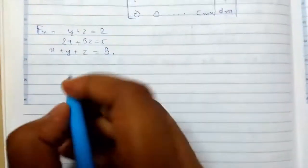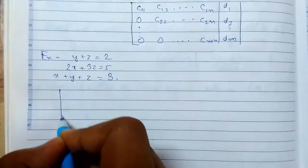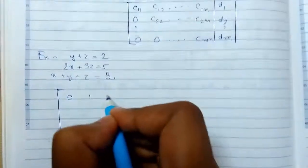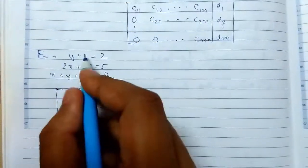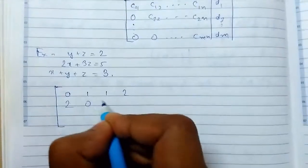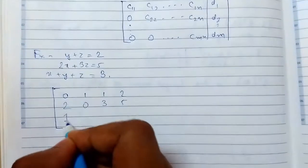In this case I'll just start the solution. This is the augmented matrix, I'll just first write the augmented matrix. So the coefficients: 0 1 1 2, 2 0 3 5, and 1 1 1 3.